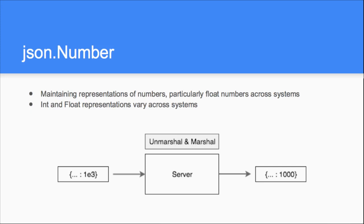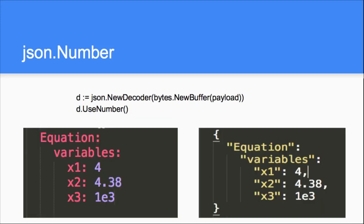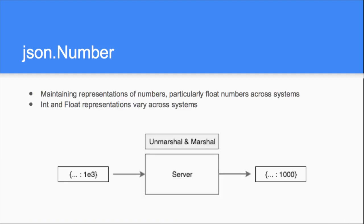One interesting thing we handled: a float number in JSON like 1e3 — which is the number one thousand. You receive it, unmarshal it, and the number gets represented as 1000. When you marshal it again to send elsewhere, you get 1000 — the original format is lost. That's why json.Number exists. Before hitting this problem I had no idea what json.Number even was.